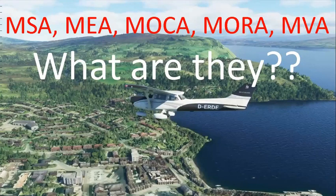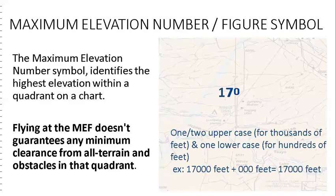Altitude awareness is key to sound decision making, and there are plenty of regulatory guidelines. Knowing the highest terrain or obstructions is very crucial and extremely helpful in picking safe cruising altitudes. Maximum Elevation Figure is a type of visual flight rule information that indicates the elevation of the highest geographical feature within a quadrangle area. It is of interest to pilots who want to be aware of the highest mountain peaks and tall towers nearby, so that they can fly above them to avoid controlled flight into terrain.